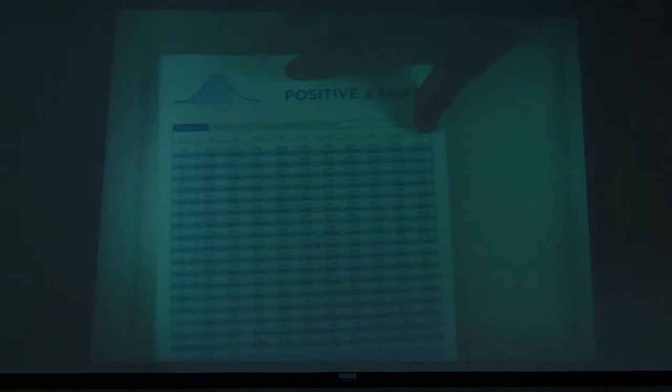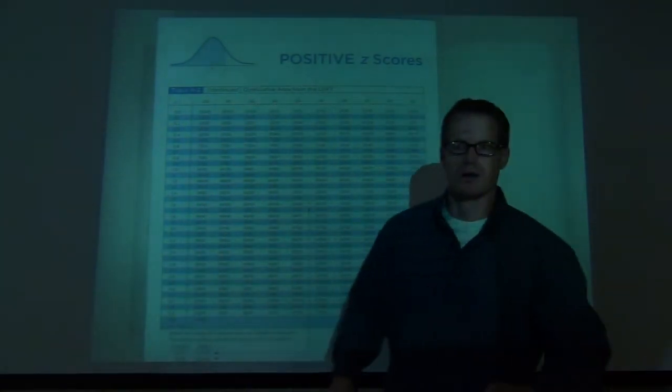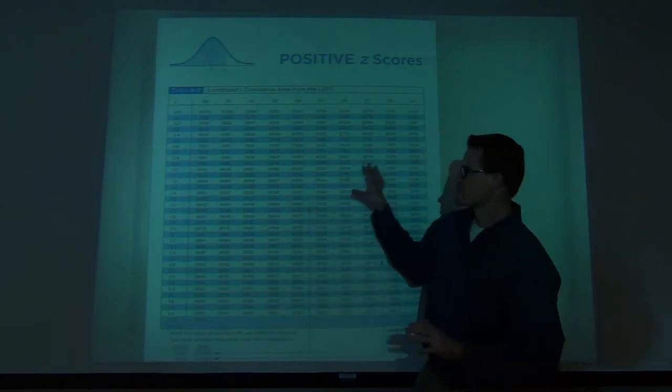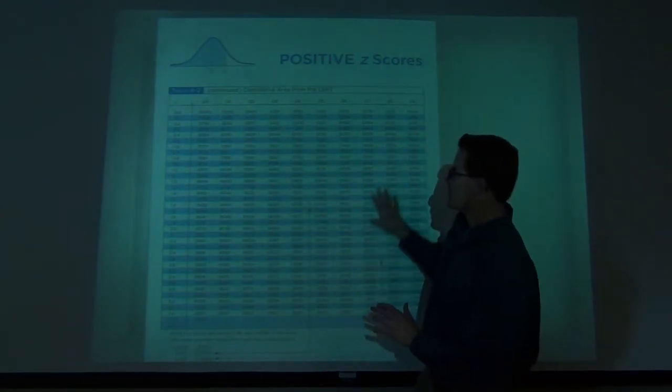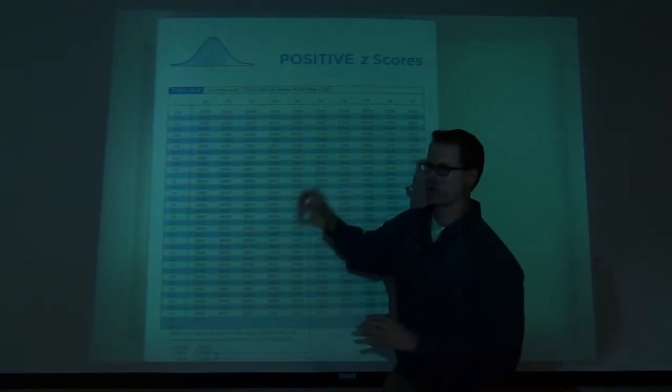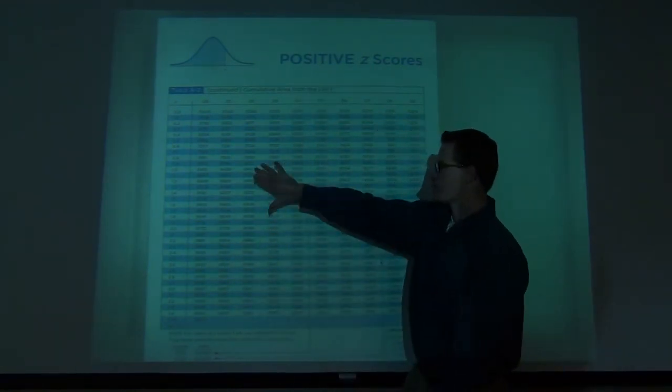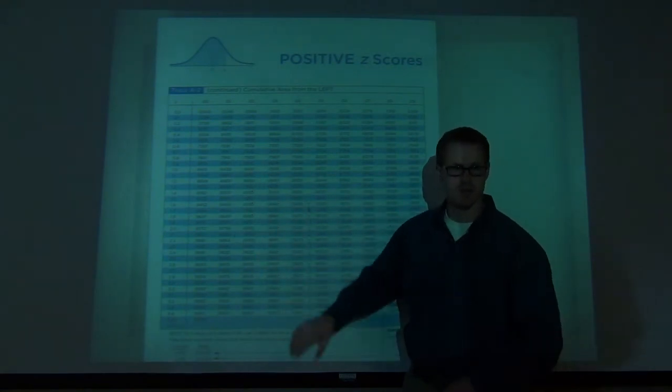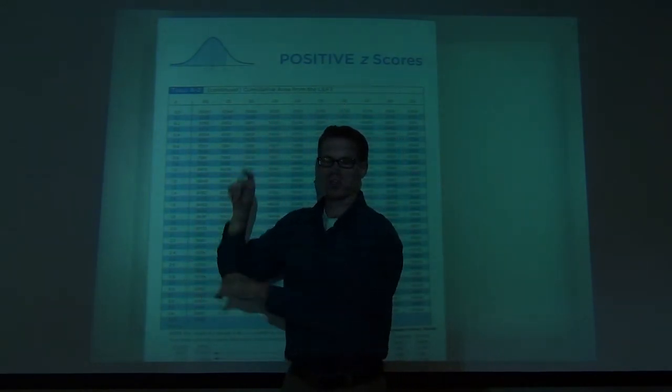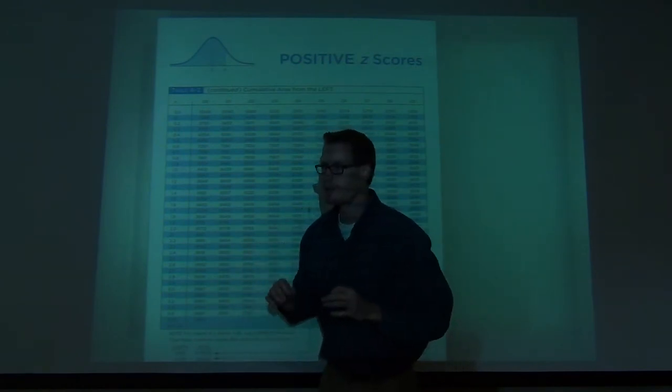Go over here to the positive z-scores. And let's think about what this table actually means. Can you tell me which are the z-scores? Are the numbers in the body of our graphic here z-scores or are these z-scores? The sides are the z-scores. Good. What are these? Areas. These are areas. These are z-scores. You can't confuse that.